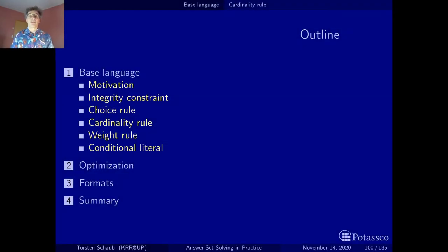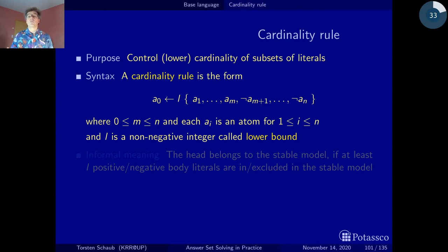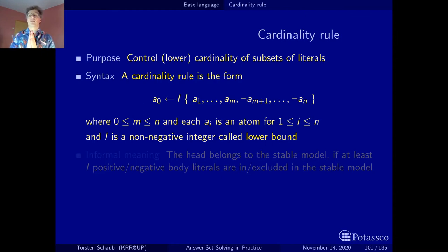As with choice rules, the basic cardinality rules are rather restricted and not so general as we've seen before. But this generality can again be compiled down, as we will now see. The purpose of all these types of cardinality rules, in particular the special one here, is to control the cardinality of subsets of literals.